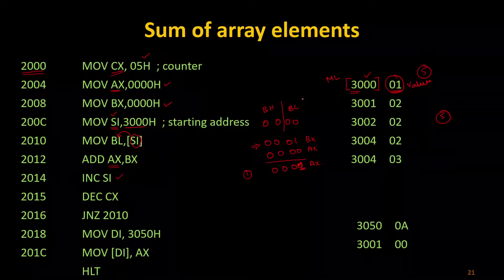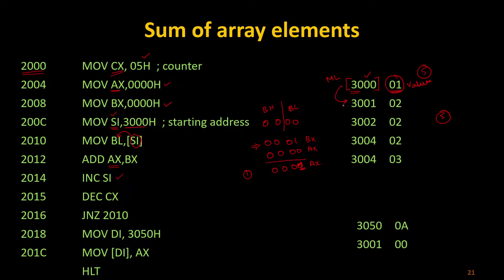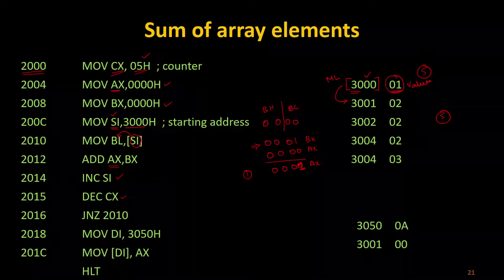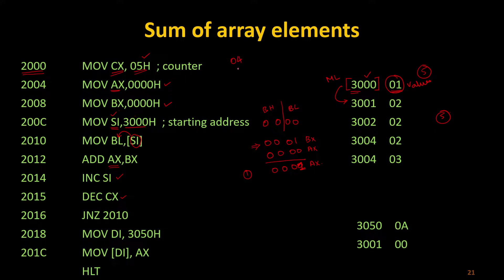After the first iteration I have to increment my SI so I can move to the next memory location, and after that I have to decrement my CX so the count gets decremented. It starts with 05, then decrements to 04, 03, 02, 01. When it becomes 00, the loop cuts off. So CX is getting decremented and SI is getting incremented each time through the loop.